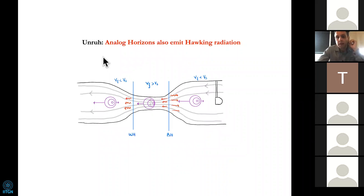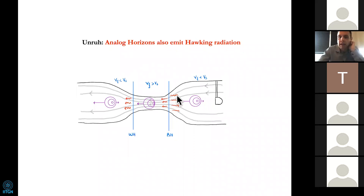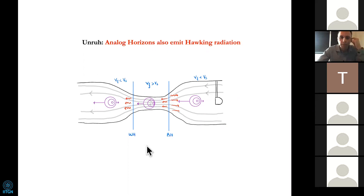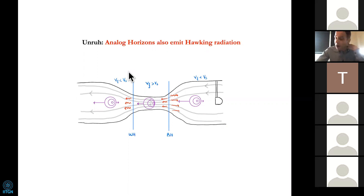What Unruh pointed out is that if you study the sound propagating here, you find the same equations that Hawking found for the astrophysical case, and therefore Hawking's conclusions also apply here. Namely, this sonic black hole should emit thermal pairs of particles, and the radiation going to the right should have a thermal black body spectrum. So there is spontaneous particle creation — particle emission from this black hole with a thermal spectrum and a well-defined temperature, and the same for the white hole. The message is that the Hawking effect is not unique to astrophysical objects — it is a generic effect. Any causal barrier with waves propagating thereon should emit Hawking radiation.